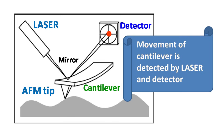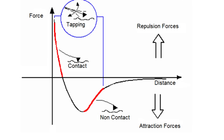As the cantilever moves up and down depending on the sample surface, the laser is deflected and gives information about the sample surface. The three main modes in which the atomic force microscope is operated are: contact mode, non-contact mode, and tapping mode.